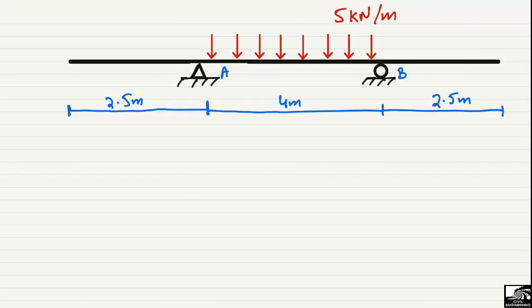Welcome back to the Civil Engineering YouTube channel. In today's lecture, we are going to analyze an overhanging beam with two supports A and B. There is a 5 kN load acting on the mid-span of the overhanging beam, and we have to find out the support reactions at point A and point B, and also draw the shear force and bending moment diagram for this beam.